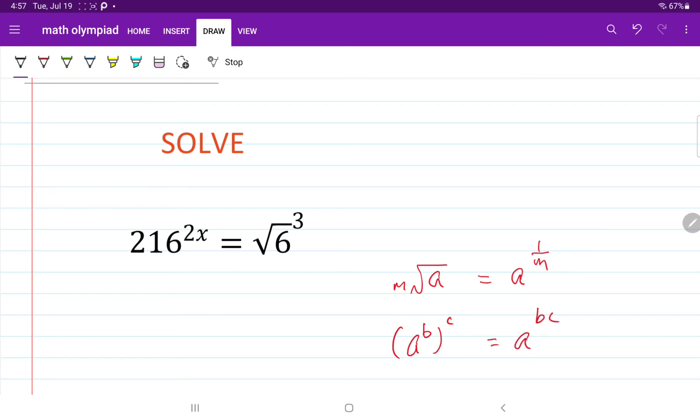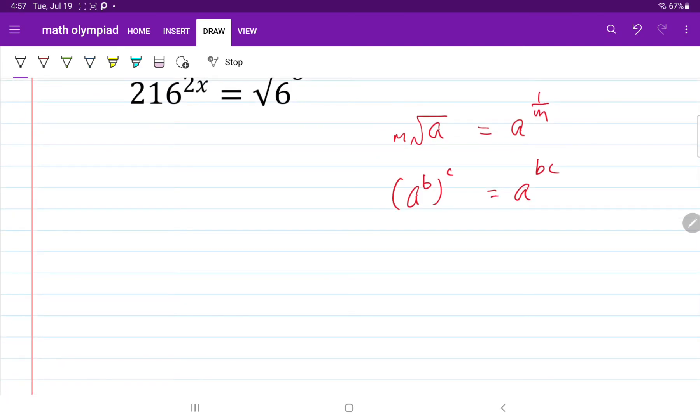Now let's solve this equation. First, let's write 216 with the base of 6. So I'm going to write it as 216 is equal to 6 cubed.